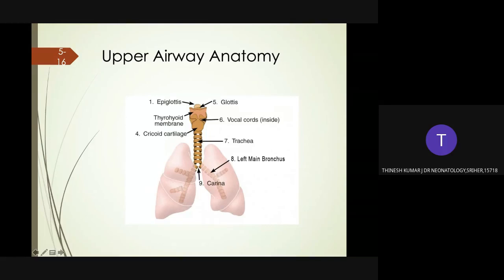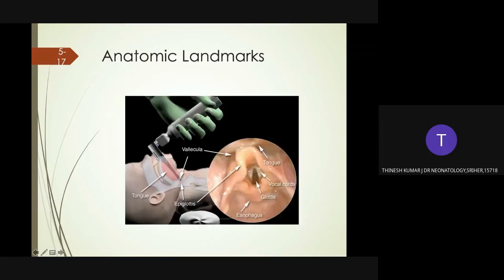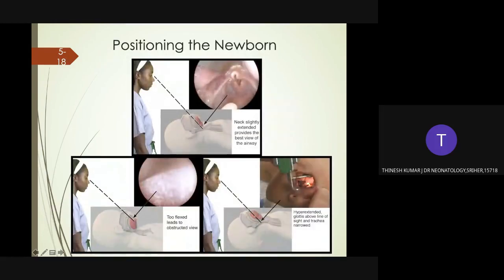The larynx is the pouch formed by the base of the tongue and the epiglottis, connecting the pharynx and the trachea. These anatomical landmarks are visible while intubating the baby: the glottis, the vocal cords as white V-shaped structures, and below the glottis the esophagus, and above the epiglottis the tongue. The baby's head should be midline in a sniffing position — slightly extended — to provide the best view of the airway. A neck too flexed leads to an obstructed view; hyperextension places the glottis above the line of sight.